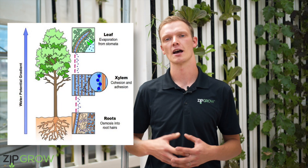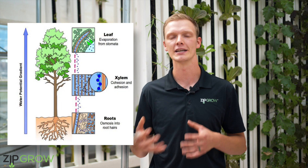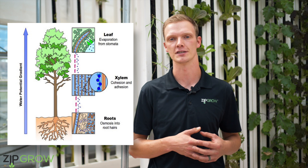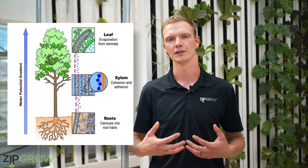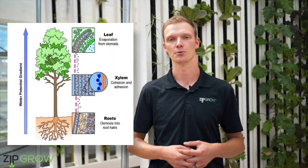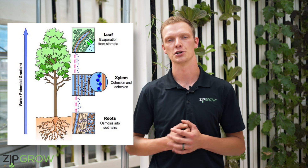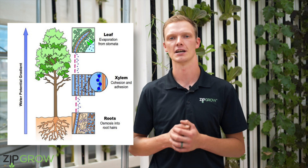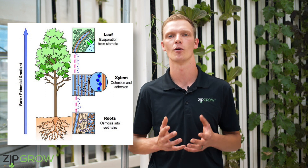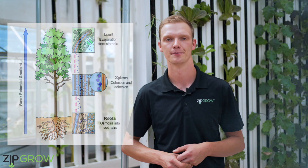VPD dictates how much water is brought up into the plant through cohesion tension forces. On the leaf there are stomata, which release humidity into the air and drive those cohesion tension forces through the plant, pulling water and nutrients to the tip of the plant.